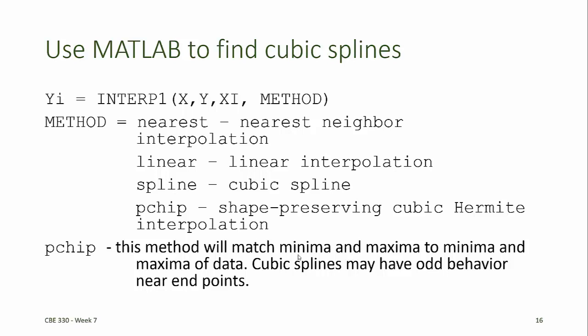Pchip is another option that is a shape-preserving cubic hermite interpolation, which we did not discuss, but essentially this method preserves the minima and maxima of the data because cubic splines can sometimes have odd behavior near the endpoints.